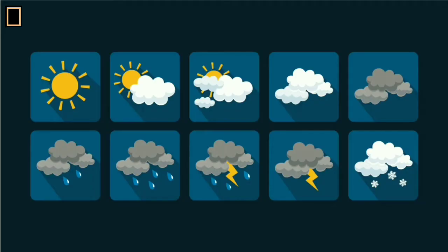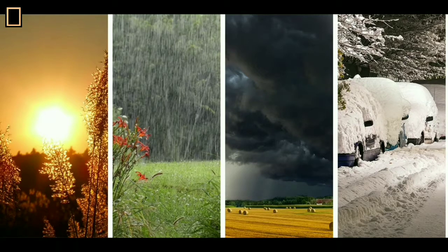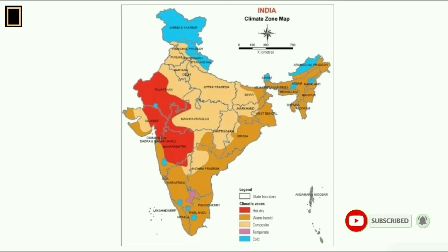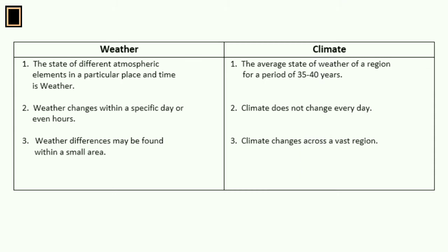The climate of a region is the average weather condition over a span of 30 to 40 years. The climate remains almost the same for years together. There are seven major climatic regions in the world. For example, India has tropical monsoon type of climate.